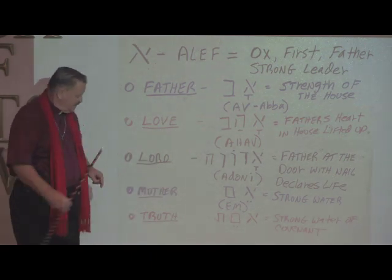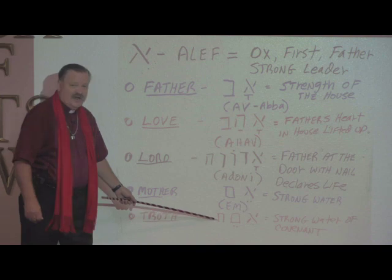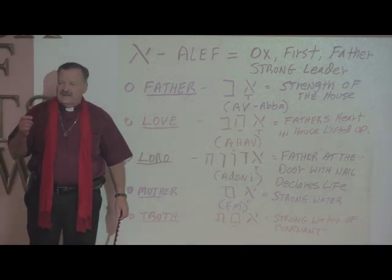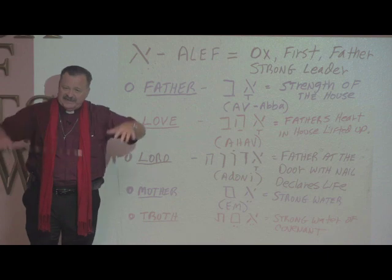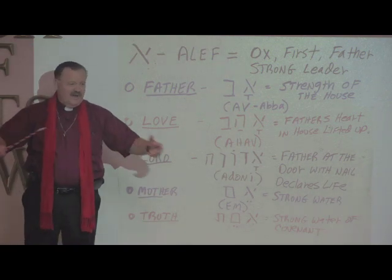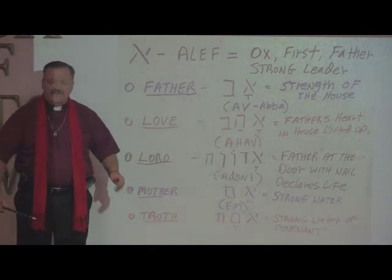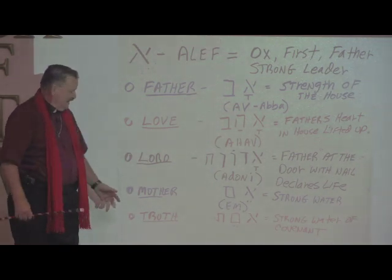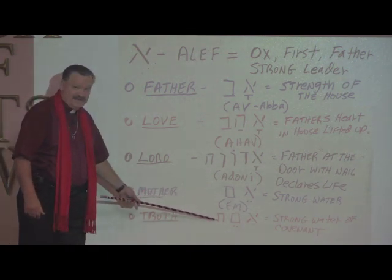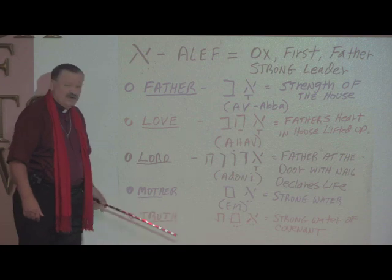Now watch this. If you want to go from mother to truth, you take the word mother and add the Tav at the end of it. Why would that be? Because the mother was the one who taught covenant to her children. She was the one who would sit them down and tell them the stories from the Torah, from the Old Testament — David and Goliath, Jonah in the well — all of the stories having to do with covenant were taught by mama. So mama was responsible to make sure that the children grew up knowing the ways of the Lord. That's why truth is defined by a mother who is lifting up covenant.